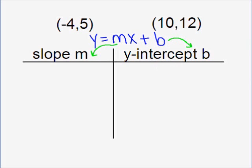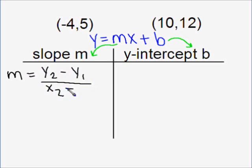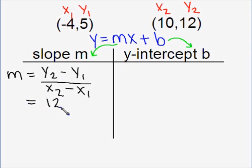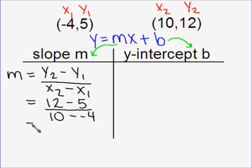Now, we aren't given the slope, but we're given two points. So we can find the slope by using the slope formula: y-sub-two minus y-sub-one over x-sub-two minus x-sub-one. Labeling our points, negative four is x-sub-one, five is y-sub-one, ten is x-sub-two, and twelve is y-sub-two. Substituting into the formula, we replace y-sub-two with twelve, y-sub-one with five, x-sub-two with ten, and x-sub-one with negative four. Our numerator simplifies to seven, our denominator simplifies to fourteen, so our slope simplifies to one-half.